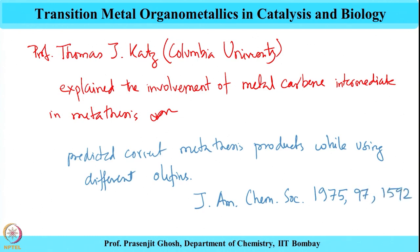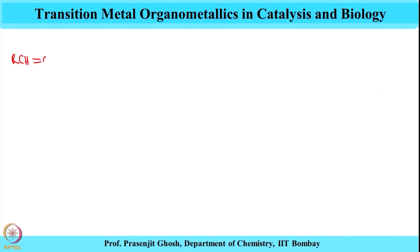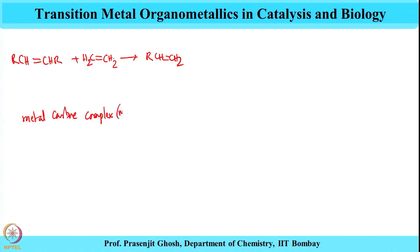In a 1972 journal paper, Katz further substantiated and validated with experimental evidence the mechanism proposed by Chauvin, which proceeds through formation of a metallocyclobutane intermediate. Katz proposed that the metal carbene complex is the catalytically active species.